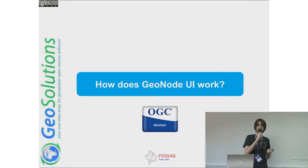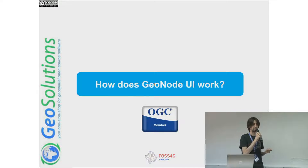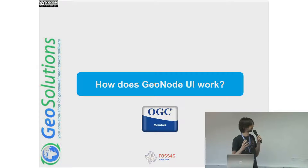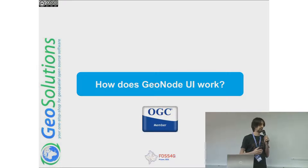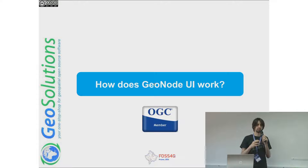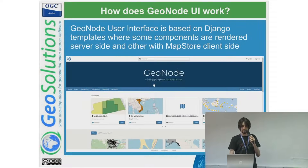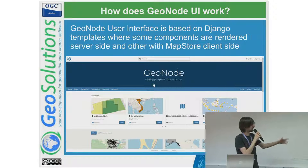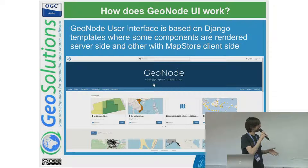Before starting with the GeoNode UI, I would like to introduce what GeoNode is. GeoNode is a content management system for spatial data — you can upload and manage data. We worked particularly from version 3.4 on improvements to the UI. Through this presentation we will highlight the pieces that compose the user interface, starting from the home page of GeoNode.